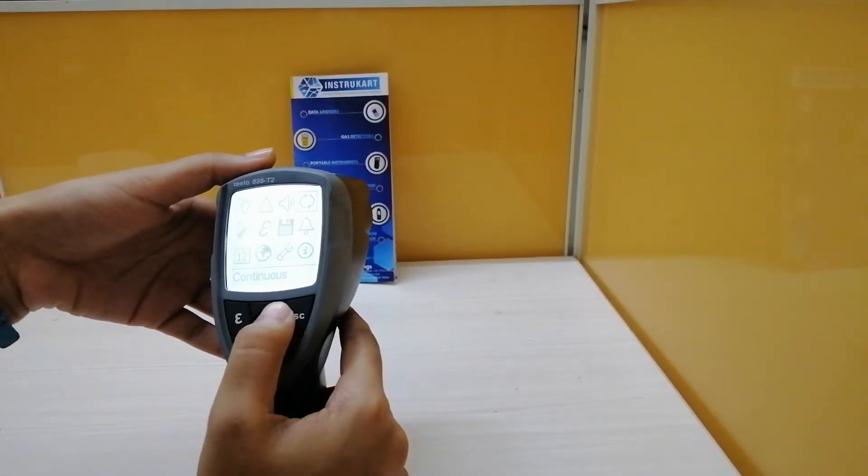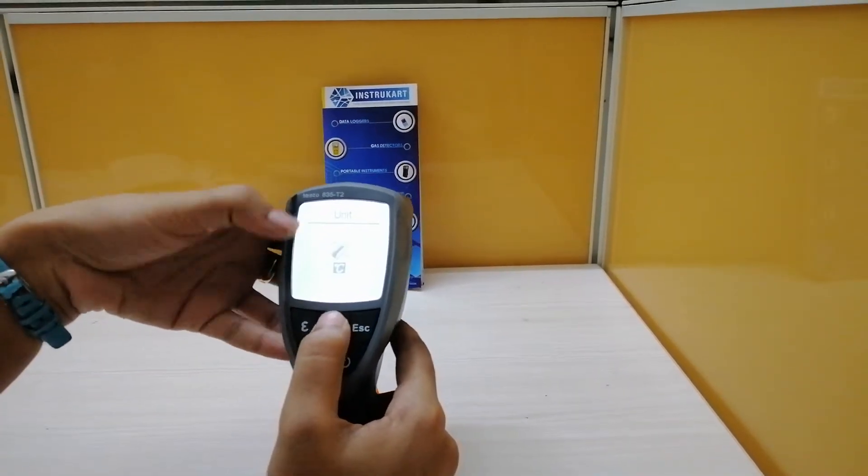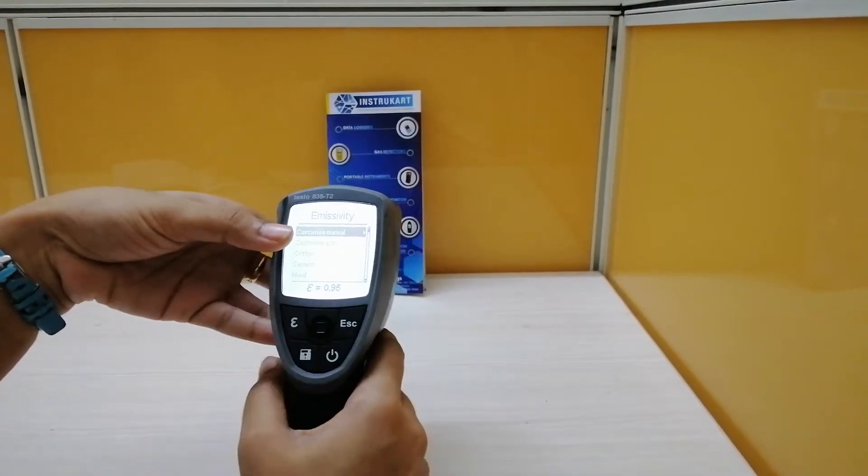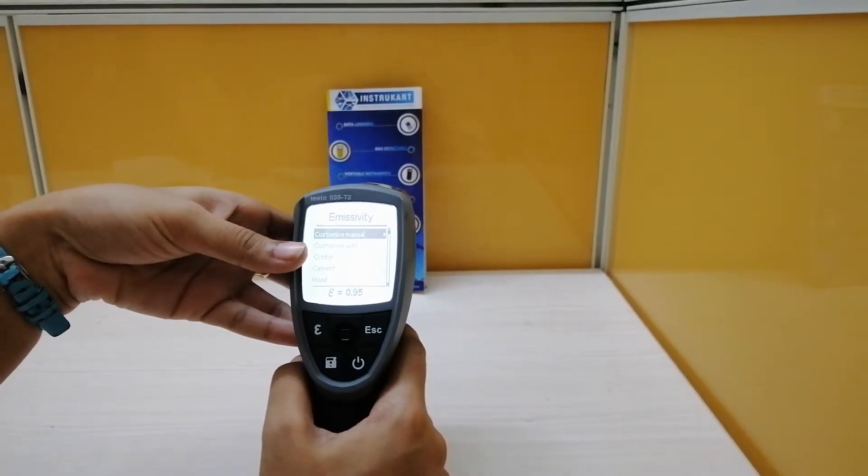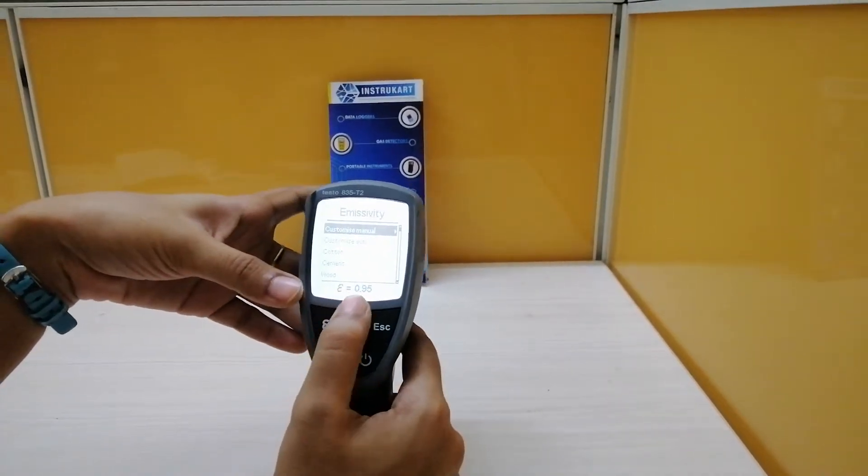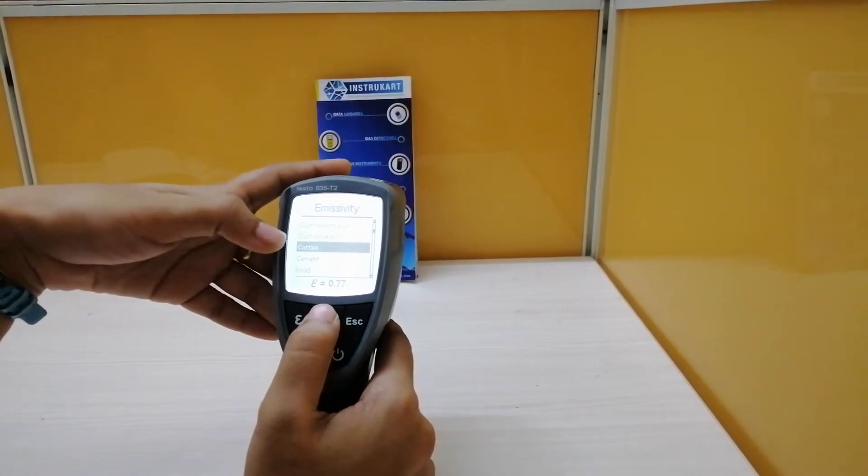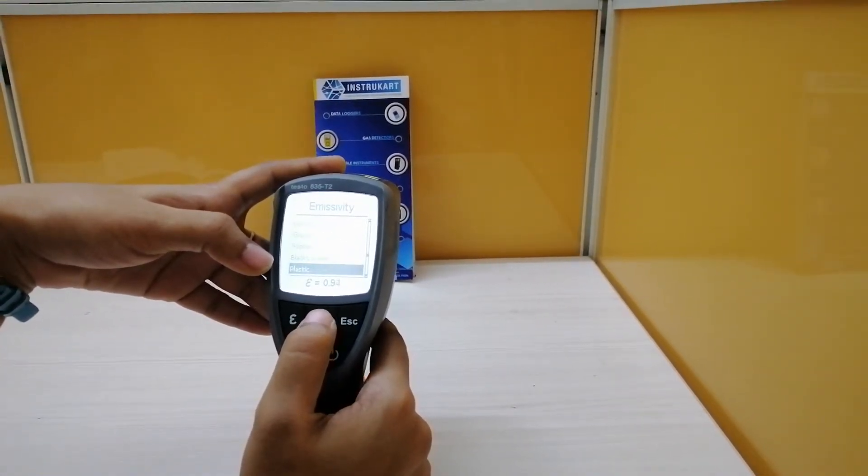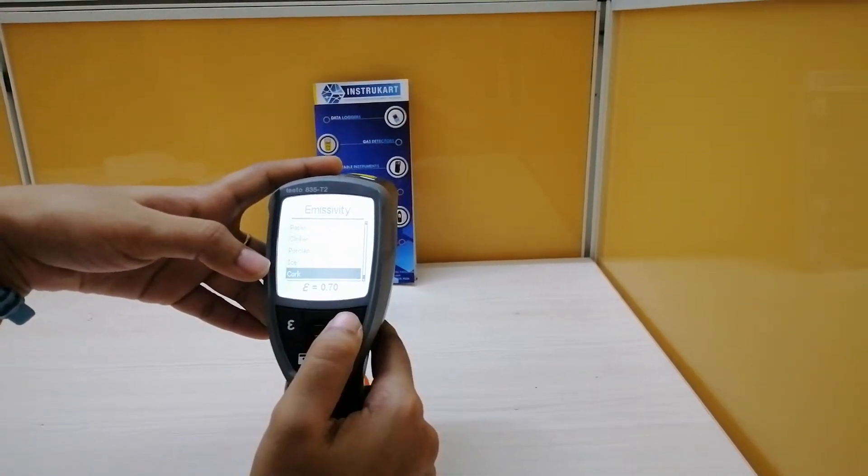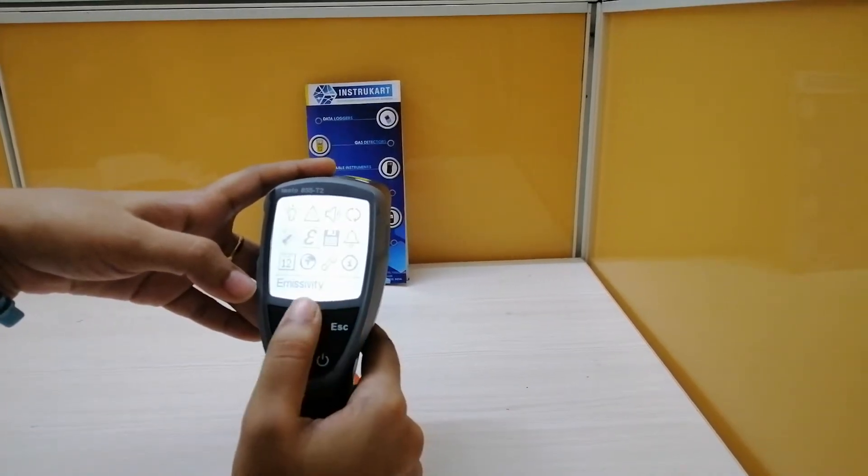This is unit changing: degrees Celsius or Fahrenheit for temperature. For emissivity, generally it will be from 0 to 1.0. You can customize it manually. The standard value is 0.95. You can also customize automatically for different materials like cotton, cement, wood, cork, ice, and others depending on the surface you're measuring.